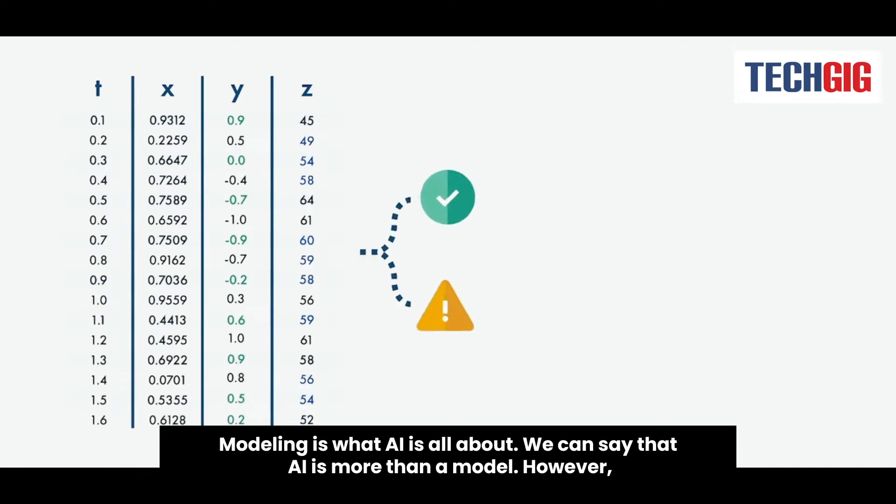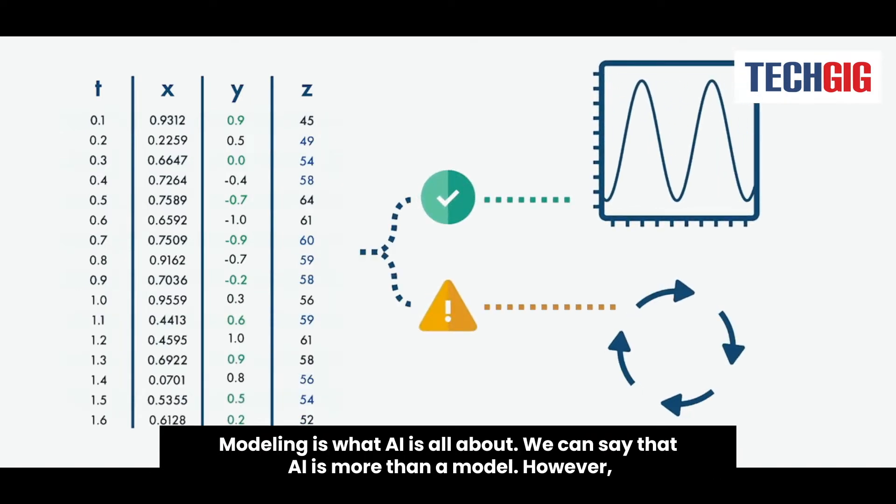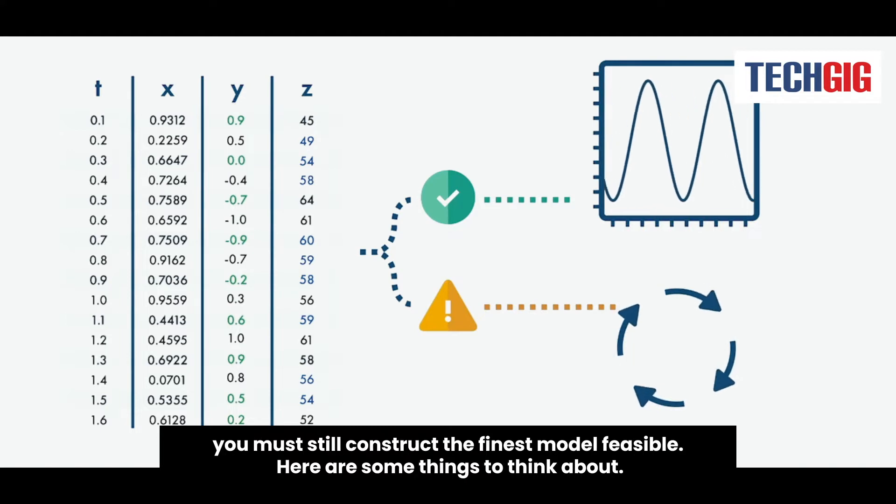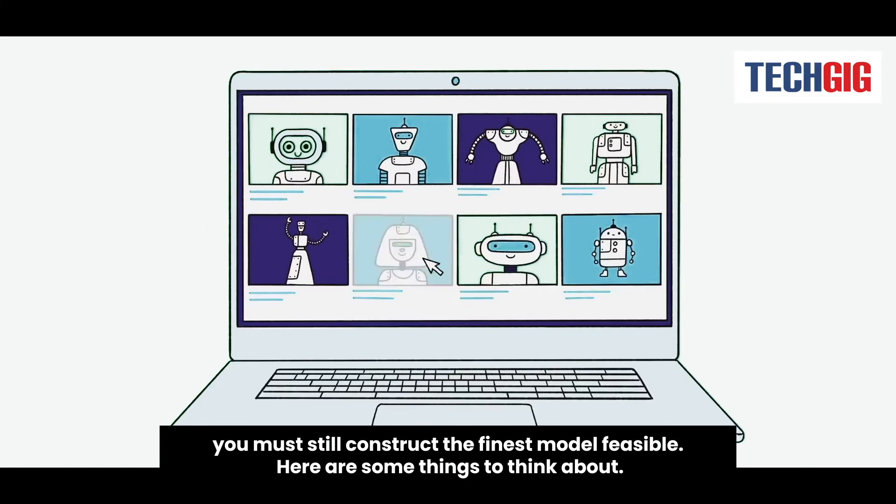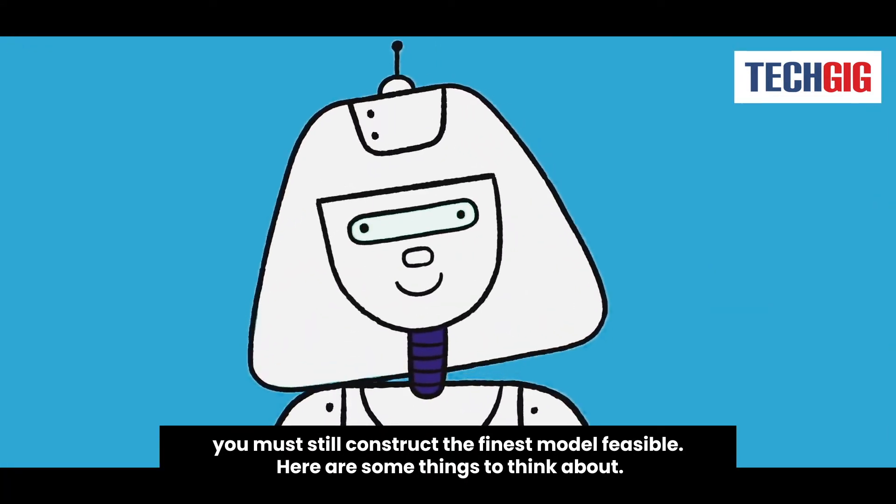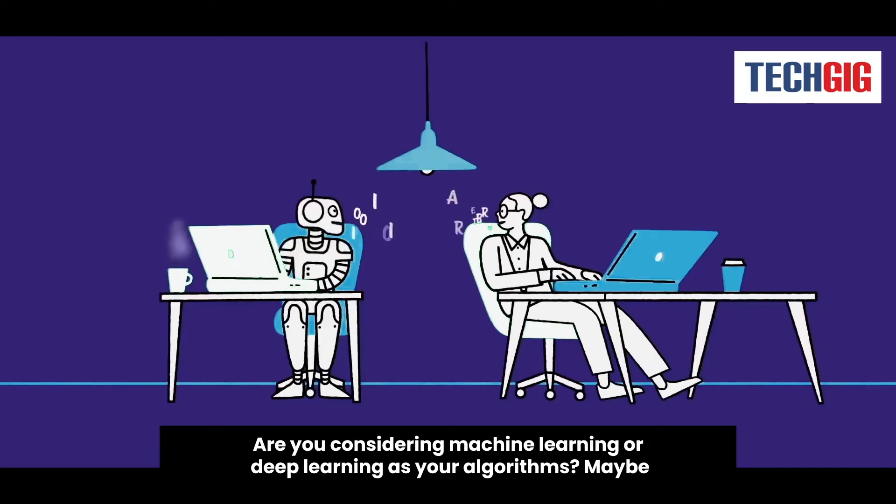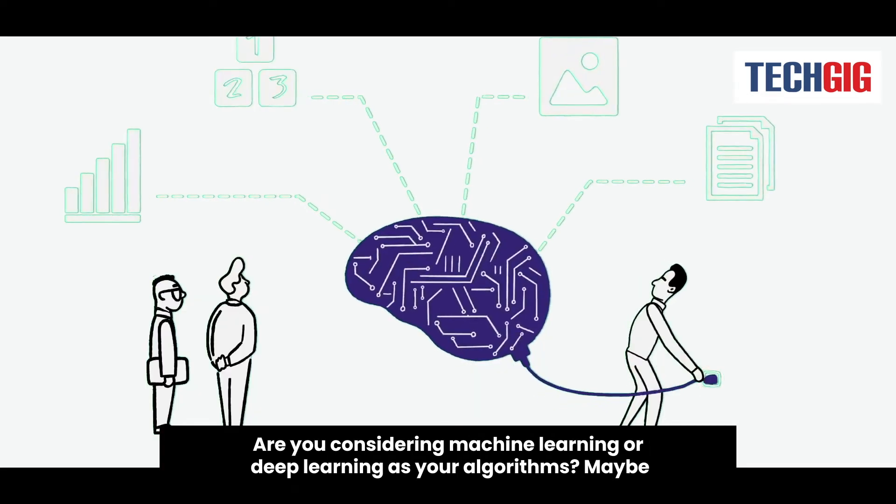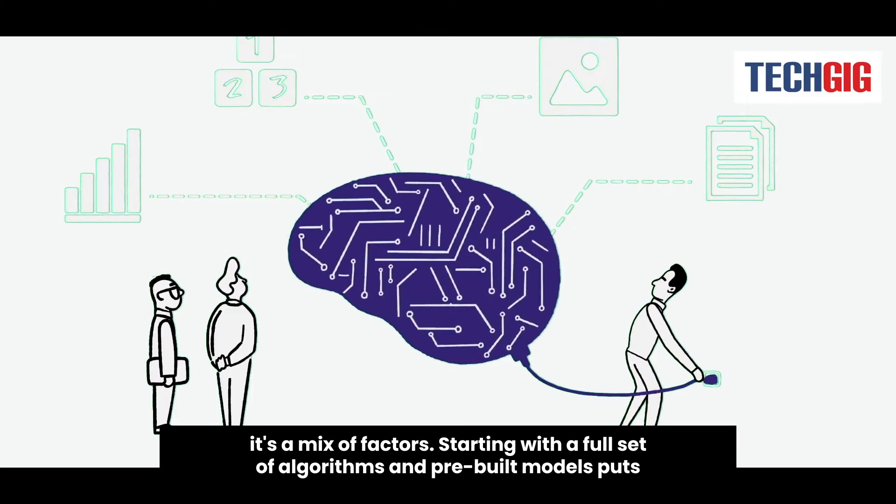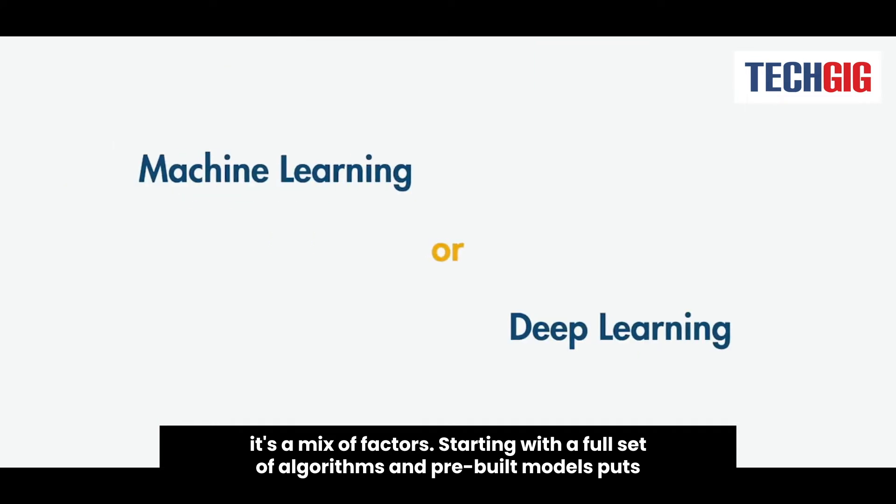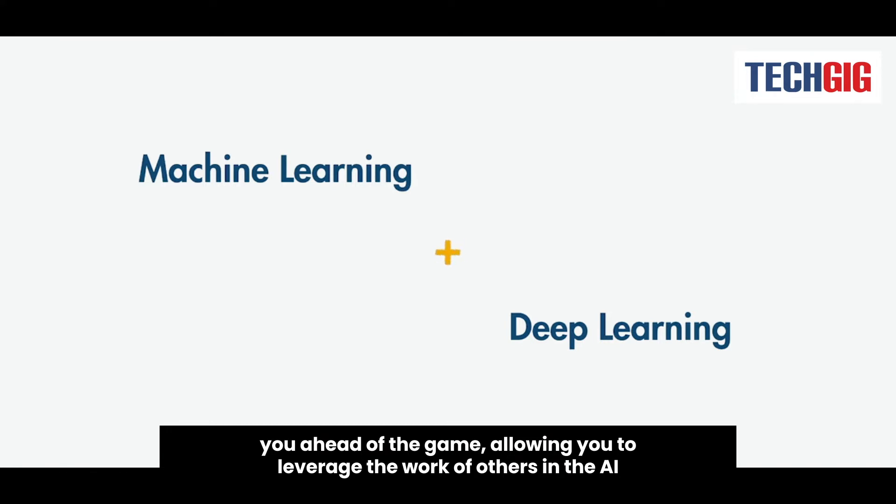Modeling is what AI is all about. We can say that AI is more than a model. However, you must still construct the finest model feasible. Here are some things to think about. Are you considering machine learning or deep learning as your algorithms? Maybe it's a mix of factors. Starting with a full set of algorithms and pre-built models puts you ahead of the game, allowing you to leverage the work of others in the AI community rather than starting from scratch.